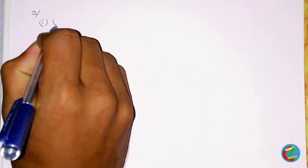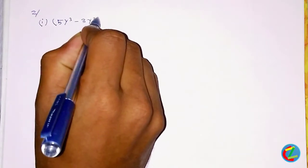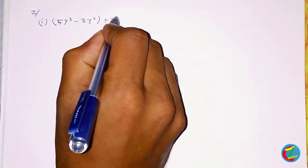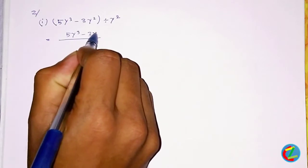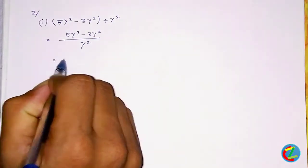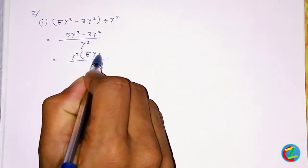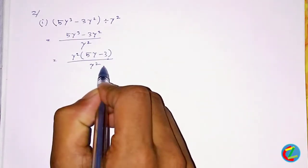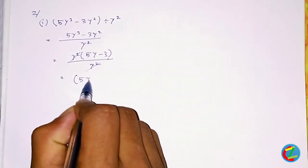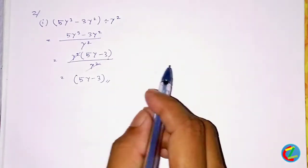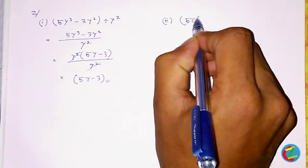The number is 5y³ minus 3y² whole, and the number is y². The number is 5y³ minus 3y² whole, and the number is y². The number is 5y³ minus 3y², and the number is 5y². The number is 5y³ whole, and the number is 6y².